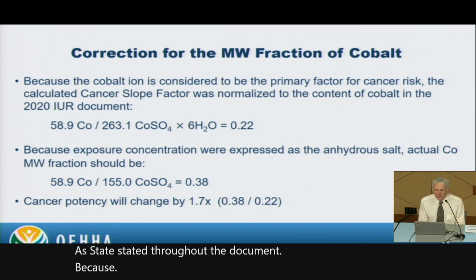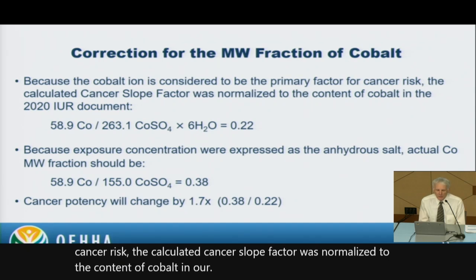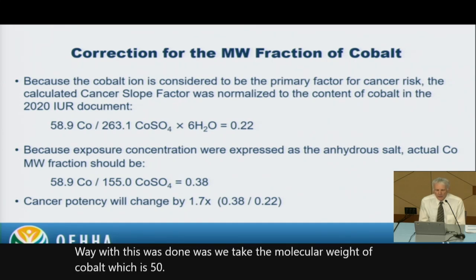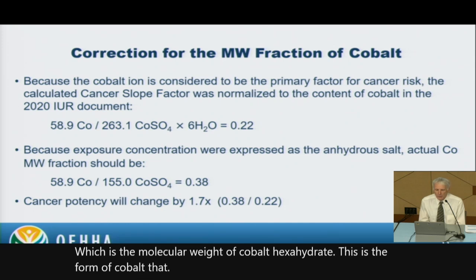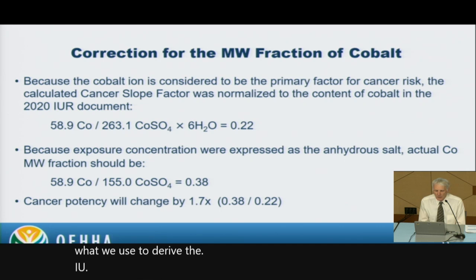Because the cobalt ion is considered the primary factor for cancer risk, the calculated cancer slope factor was normalized to the cobalt content. In our 2020 IUR document, this was done by dividing the molecular weight of cobalt — 58.9 — by 263.1, the molecular weight of cobalt hexahydrate, which is the form the animals were actually exposed to. This gives a fractional weight of cobalt of 0.22, which was used to derive the IUR in 2020.